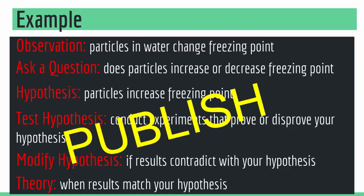These are the steps that go into making a scientific theory. We observe, then ask a question about our observation, come up with a hypothesis, and test it to back it with data. If it's true, it becomes a theory. If not, we modify it and run more tests until our hypothesis matches reality and becomes a theory.